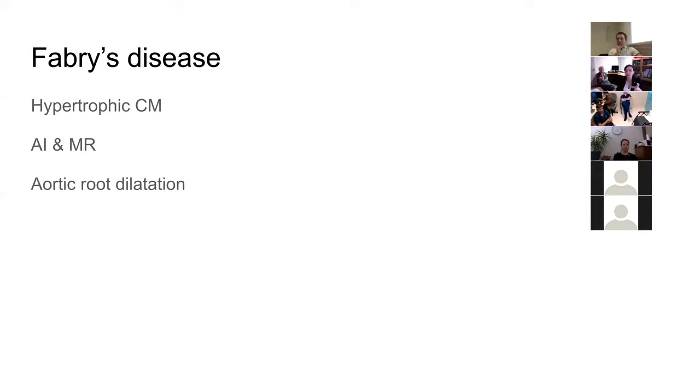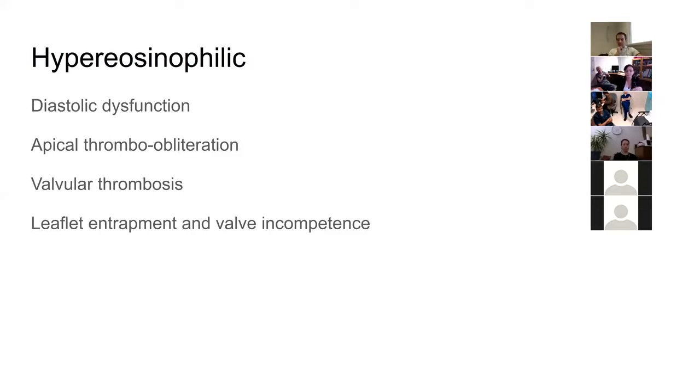Fabry's disease is very rare — a storage disease of the myocytes giving a hypertrophic cardiomyopathy pattern, with aortic regurgitation, mitral regurgitation, and aortic root dilatation. Again, you'd really only suspect it in someone already diagnosed with Fabry's disease.